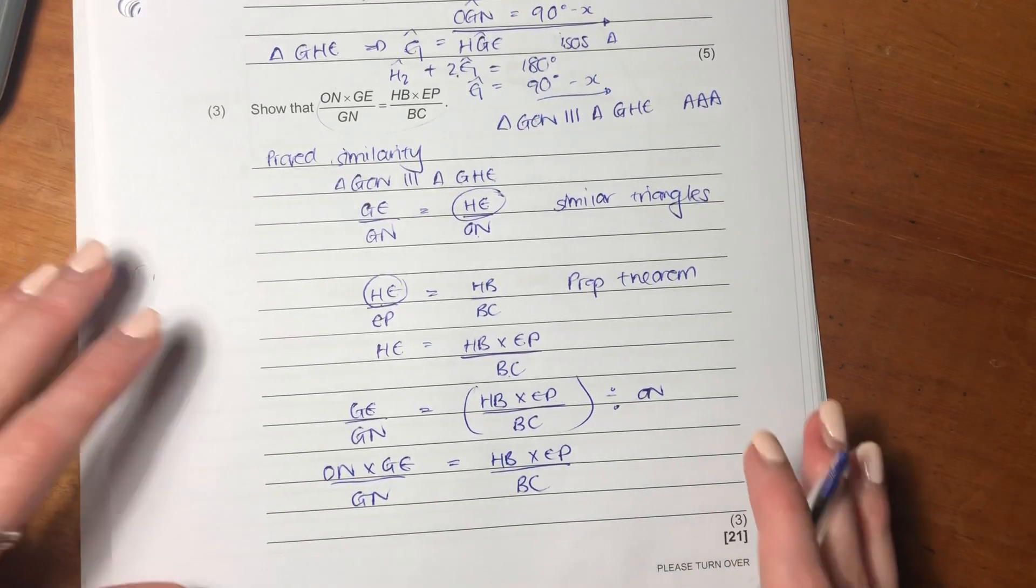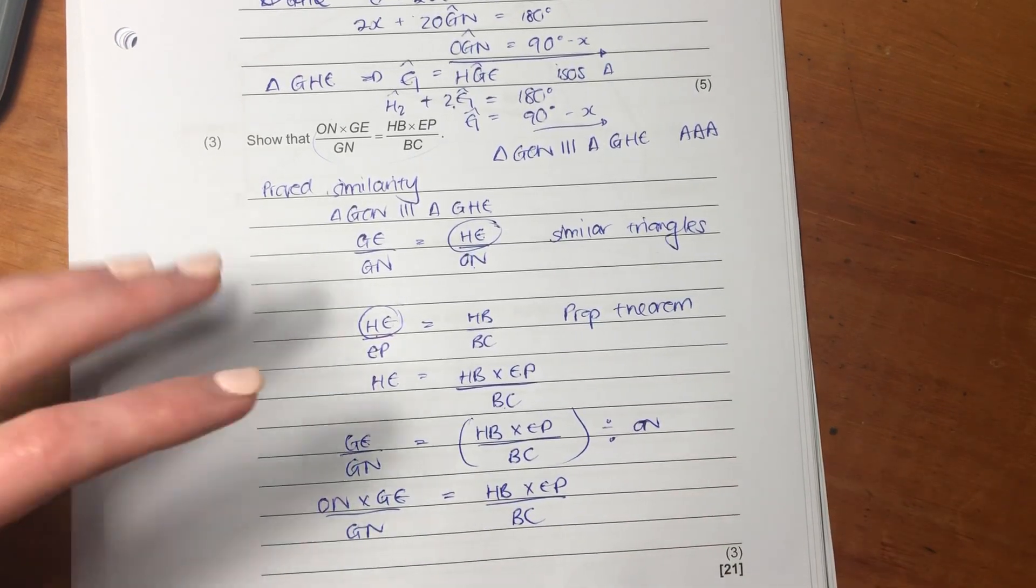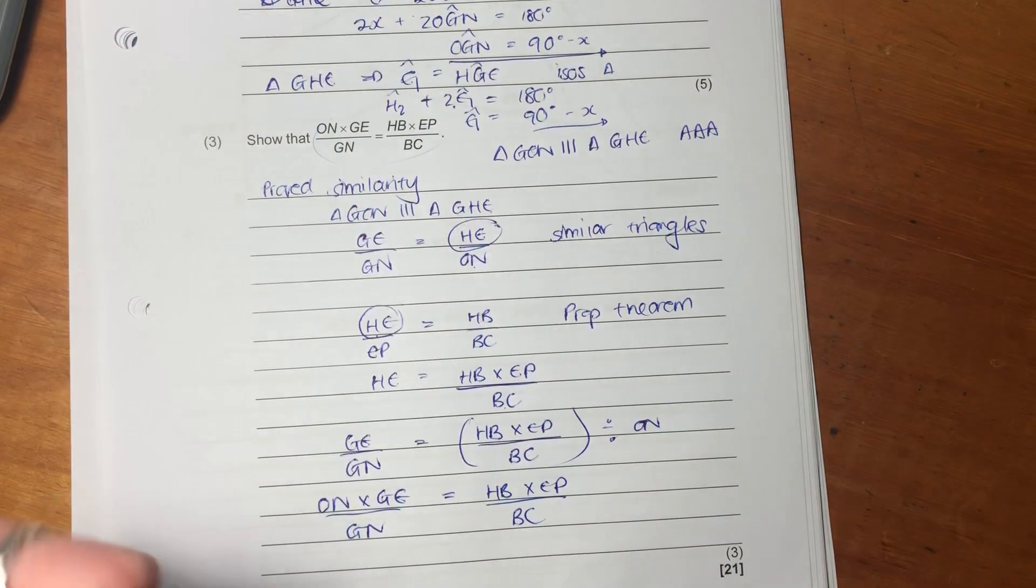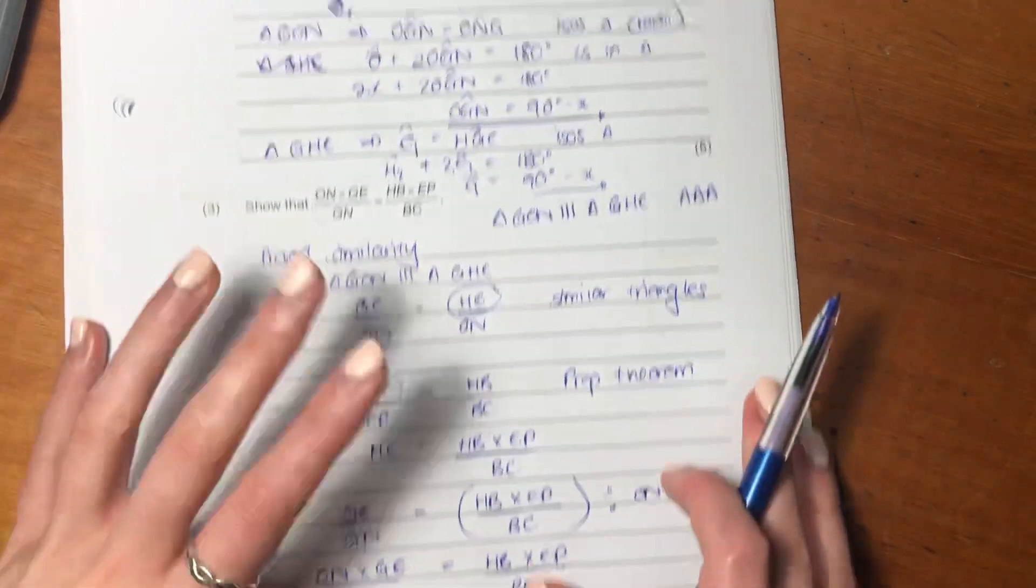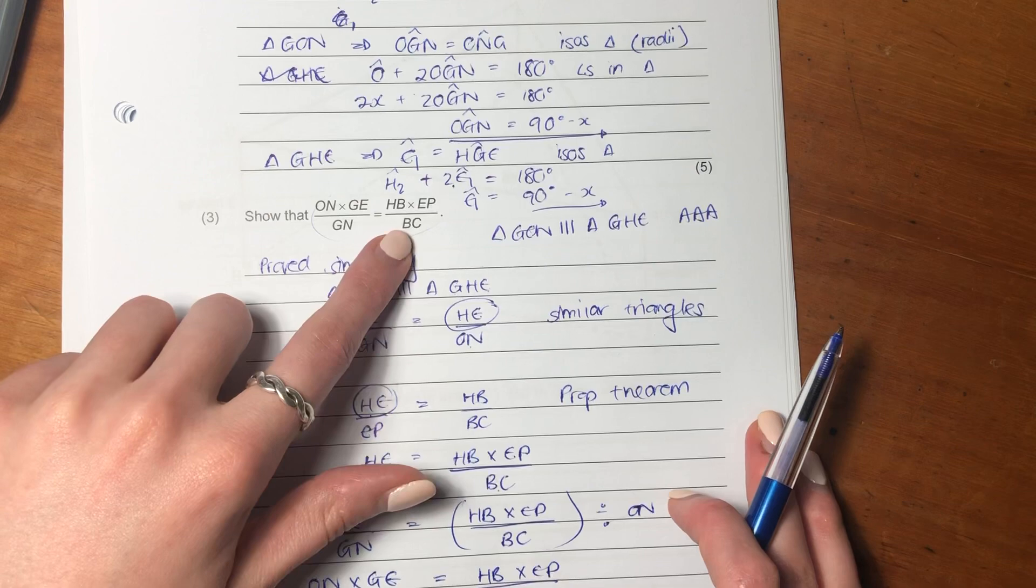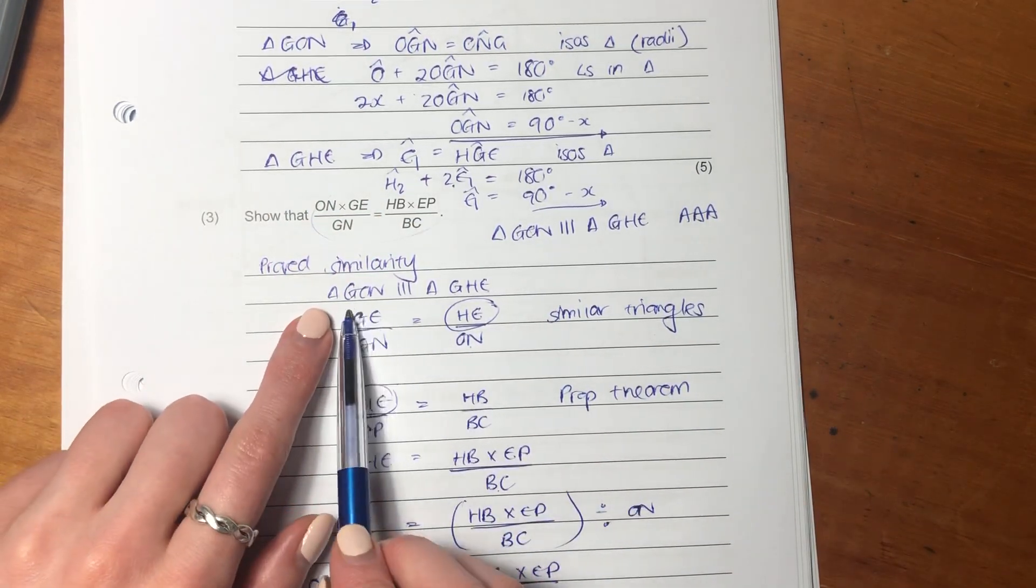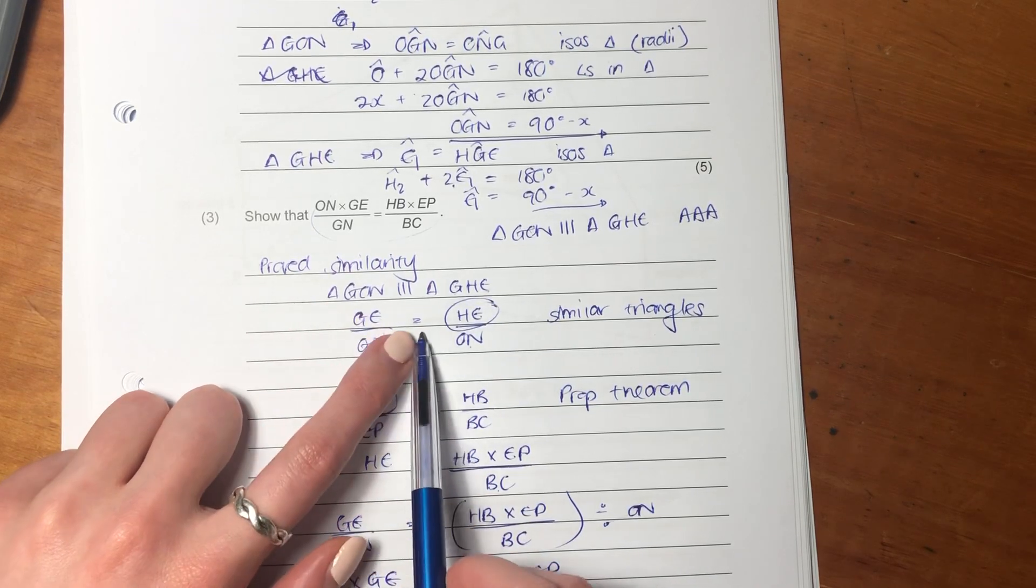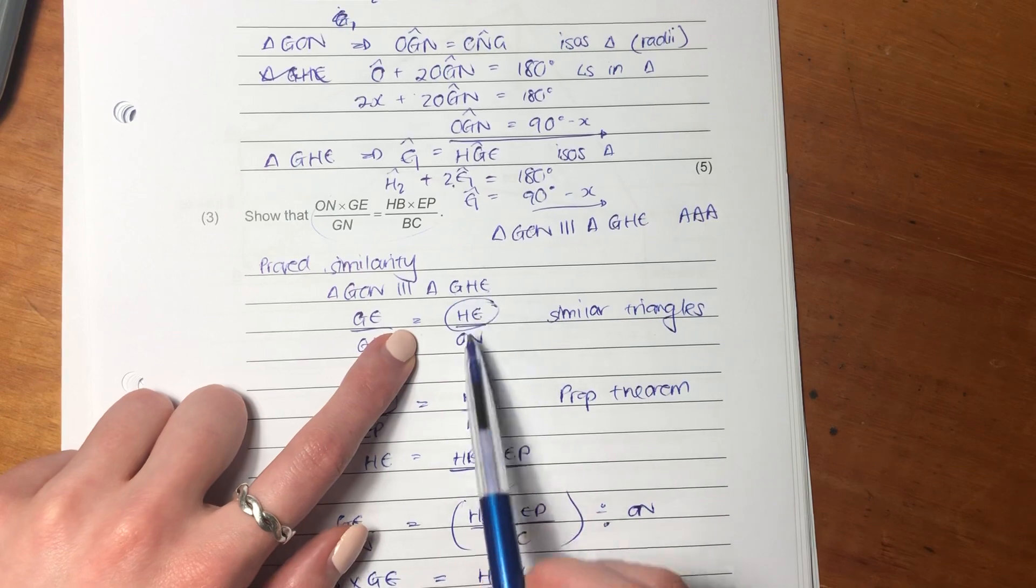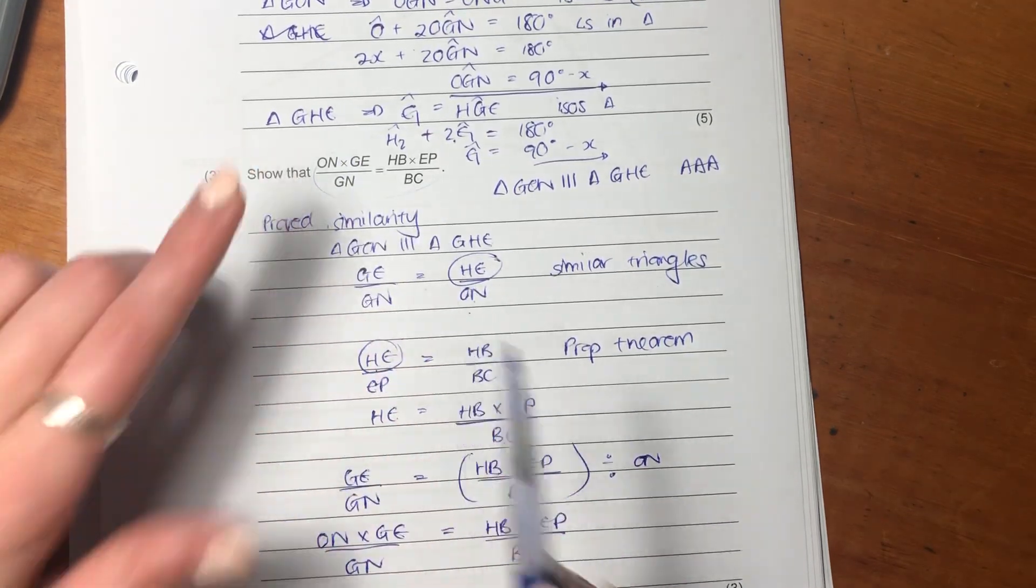So it's very important to remember with these questions this level of scaffolding. We used what we had in our previous question to use the similar triangles. And I said, what is here in this equation they've asked us to prove that I can get from similarity? I said, G-E over G-N equals H-E over O-N. So now we had three of the inputs that we wanted, but now we had this H-E.